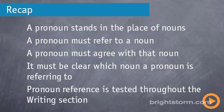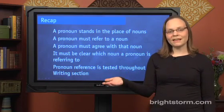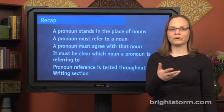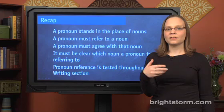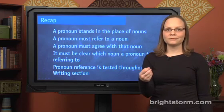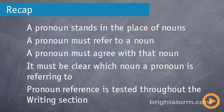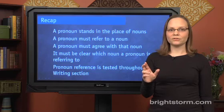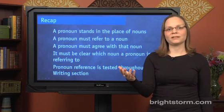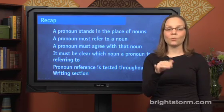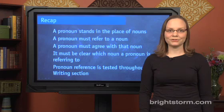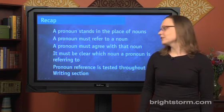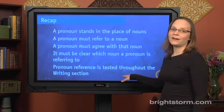Second, the pronoun must agree with the noun. So if you have a plural pronoun like they, make sure you're referring to a plural noun, like 'the people' or something like that. And the third rule: it must be clear which noun a pronoun is referring to. So if you have a pronoun like she, it has to be clear whether you're referring to one woman in particular — it shouldn't be the case that you can't tell which of two women you're talking about. These three rules come up all throughout the writing section.